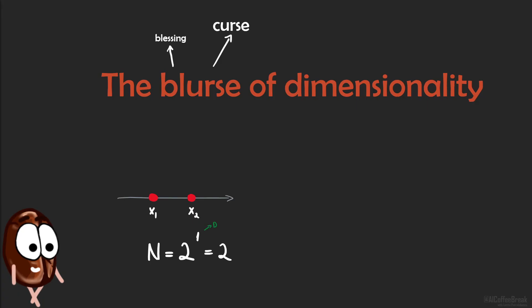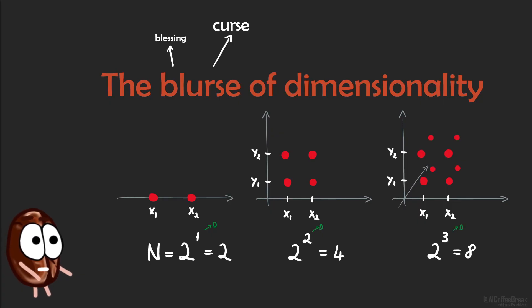For one dimension, it might be enough to sample only two points, but in two dimensions one needs four points to fill a grid with the same interval, and already eight points in three dimensions. To be precise, with each dimension, we need exponentially more points to populate the space.